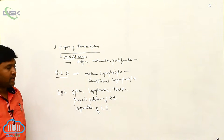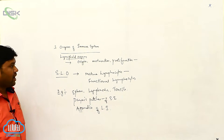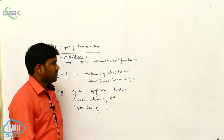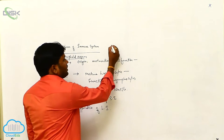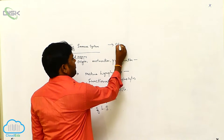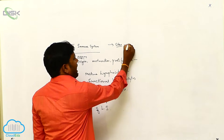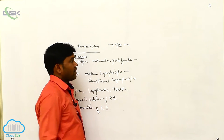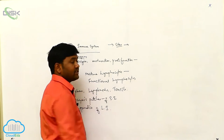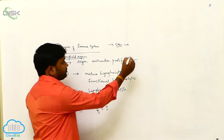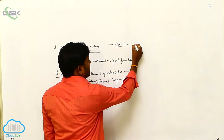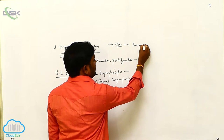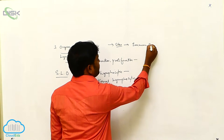These secondary lymphoid organs provide the sites for the activation and interaction of lymphocytes with the immune system.